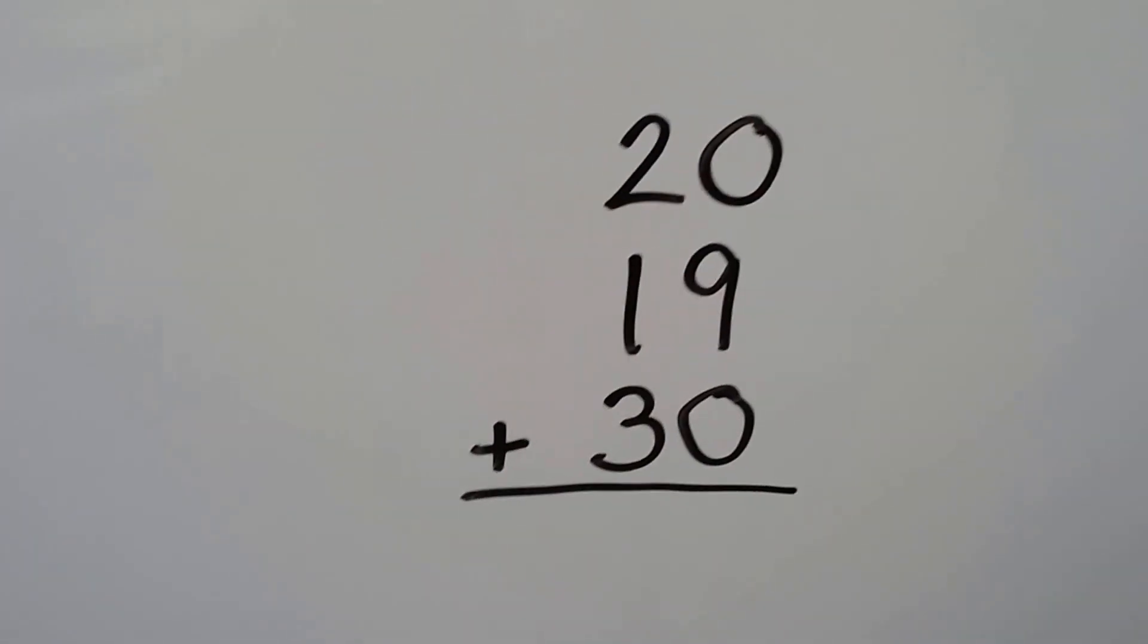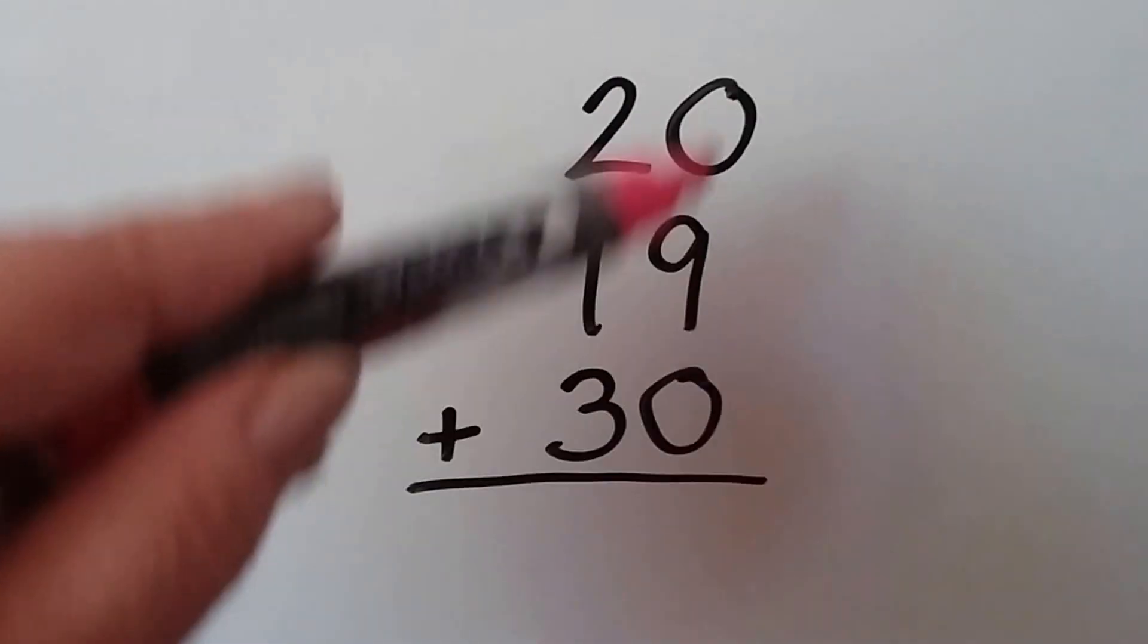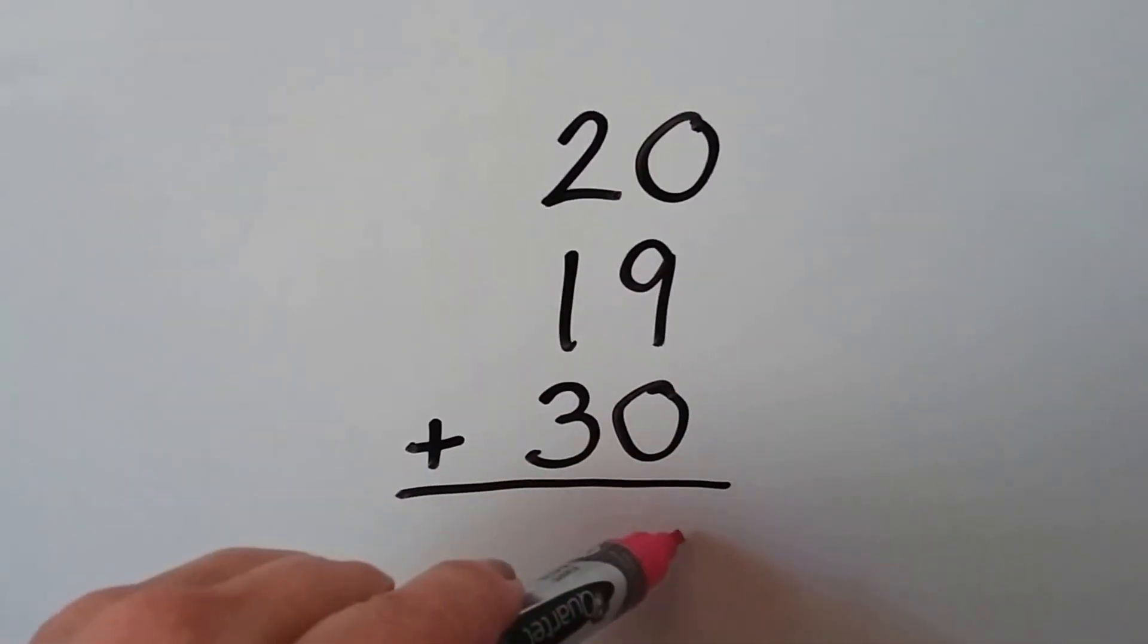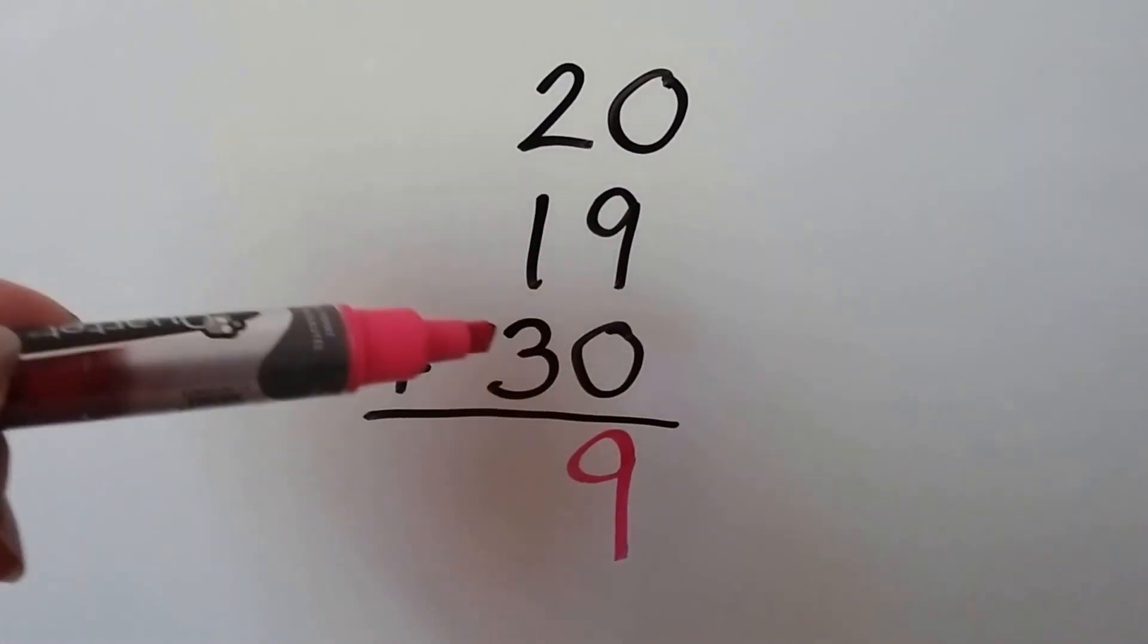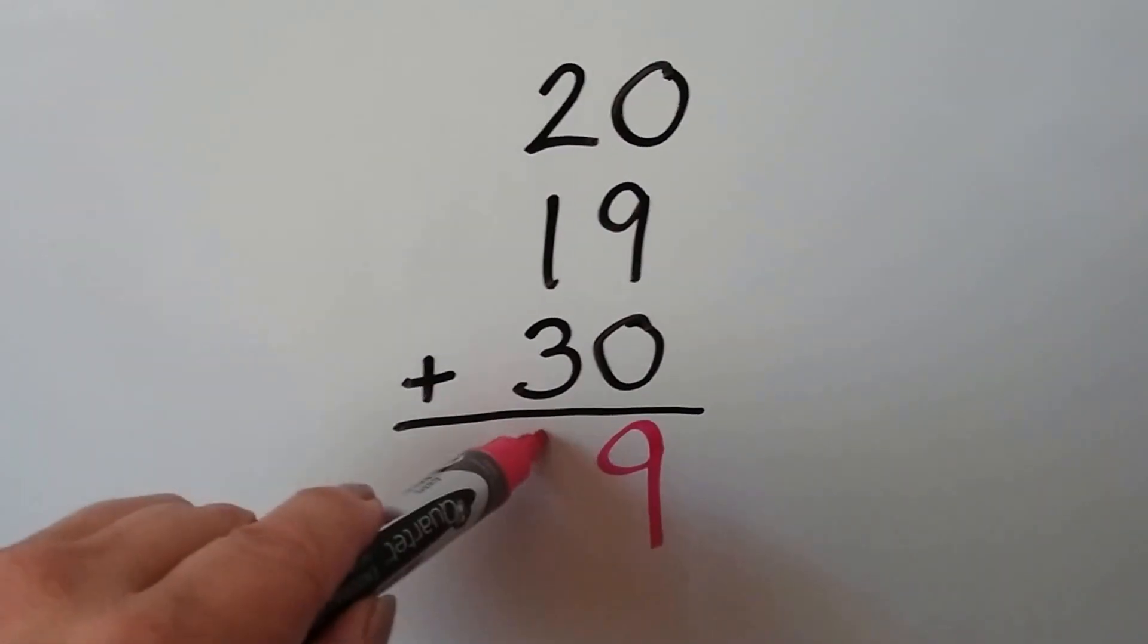Do we need to regroup in this one? Well, there's just a 9 and some 0s, so it's just a 9, isn't it? 2, 3, 4, 5, 6. We have a 69.